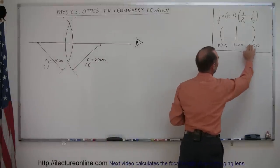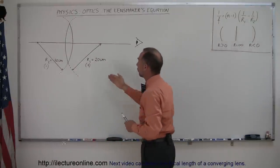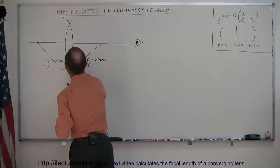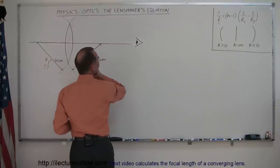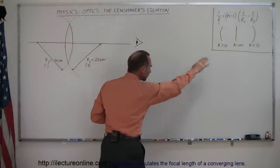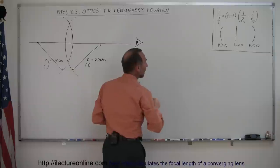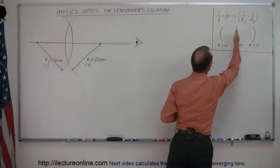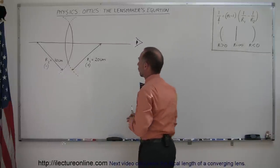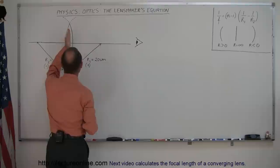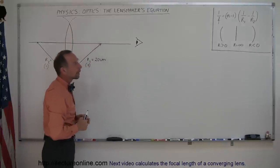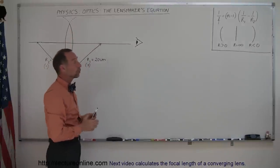If the radius of curvature bulges to the right towards the observer we call that a negative radius of curvature. So like this, this would be negative radius of curvature. And finally, if there's no radius of curvature, if the surface is flat, then we have the radius of curvature equal to infinity.